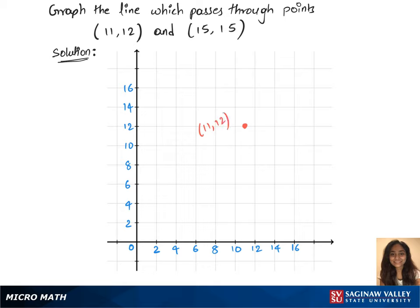We have another point, which is (15, 15), which is there. Mark that, and let's write 15, 15 right next to the point.